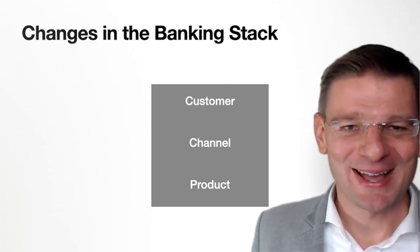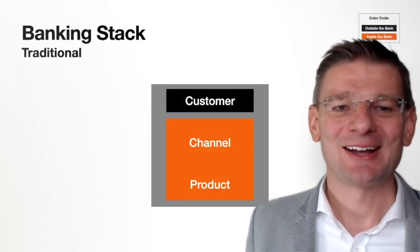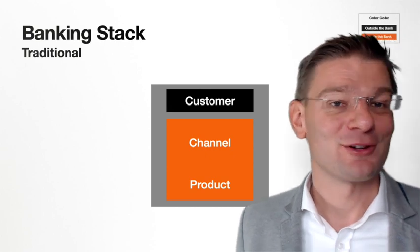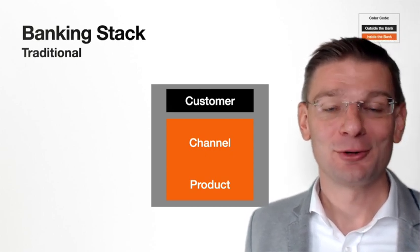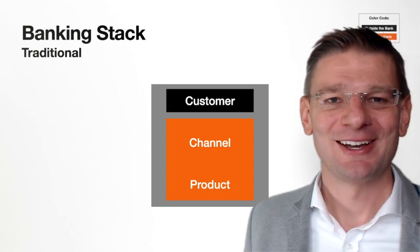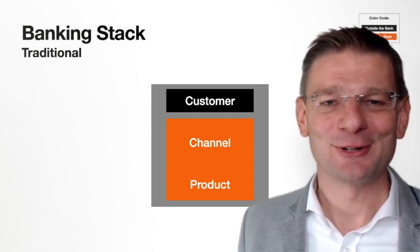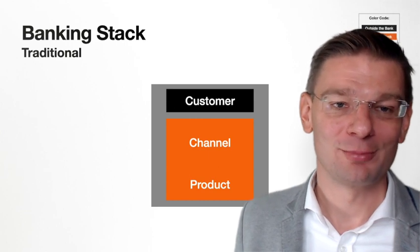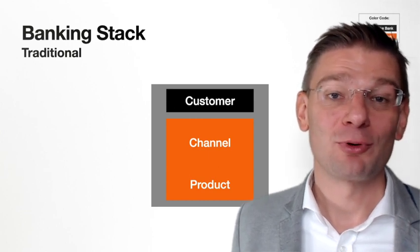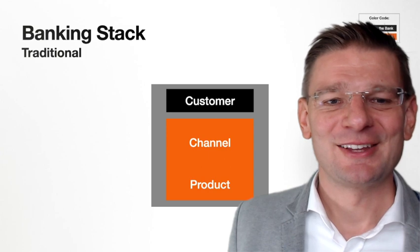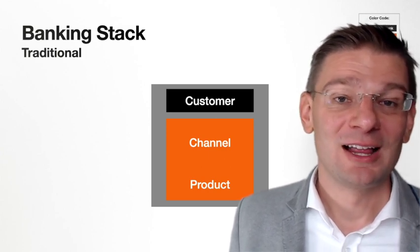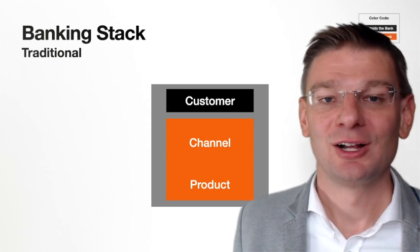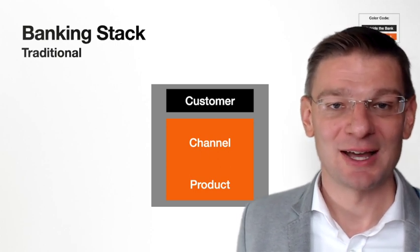The traditional banking stack consists of these three elements, but typically is actually only two elements. The customer, which is outside of the enterprise or external to the bank, and then internal to the bank, the orange block is actually comprising two — the channel and the product are very tightly linked in a traditional banking stack inside the bank.